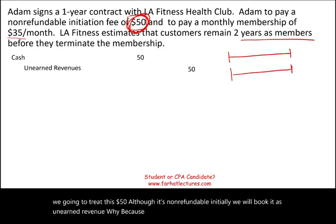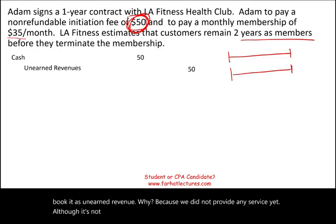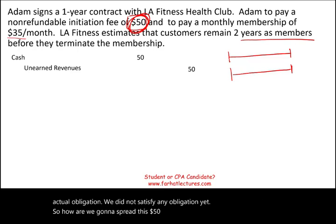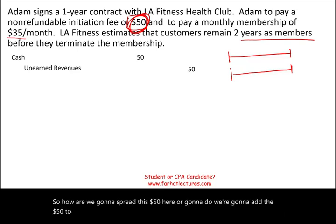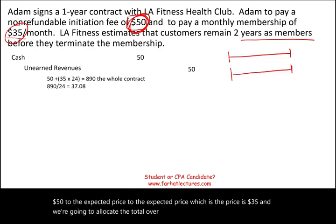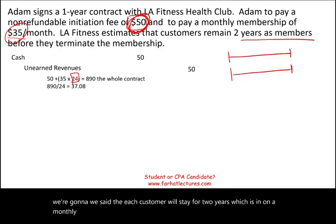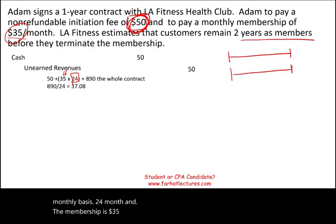Revenue must follow the actual obligation — we have not satisfied any obligation yet. So how do we spread this $50? We add the $50 to the expected monthly price of $35 and allocate the total over the expected two-year period — 24 months. That gives us: $35 × 24 = $840, plus $50, so the whole contract value is $890.